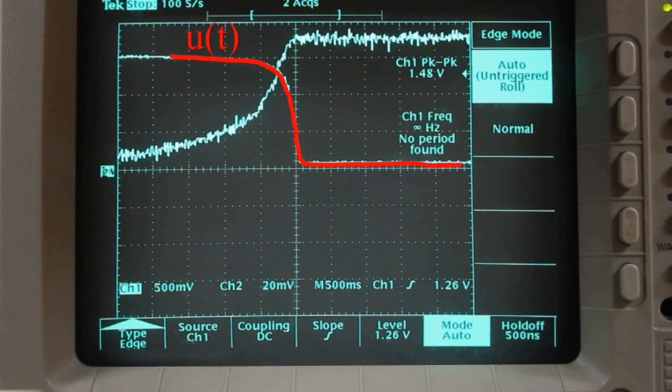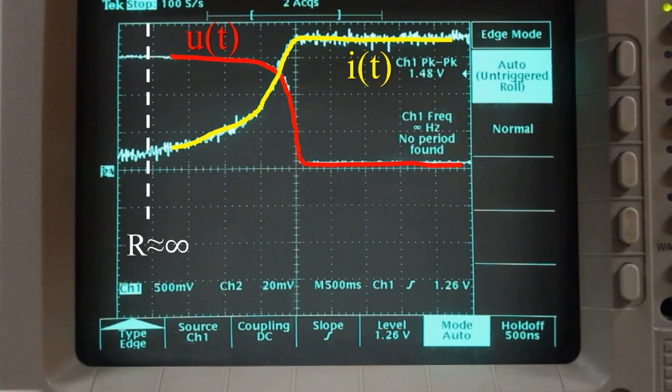This is the voltage and this is the current of the solar cells. We started with a very high value of resistance and with a very low value of current and a high value of voltage. When we change the resistance to zero, the voltage comes to zero and the current goes up.